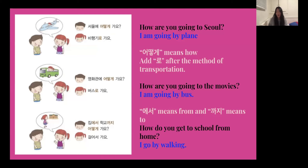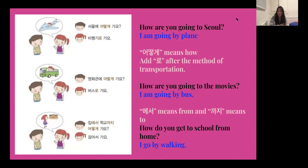There's an example reading. The boy says, 서울에 어떻게 가요? — Seoul is South Korea's capital — so: how are you going to Seoul? The girl responds, 비행기로 가요 — I'm going by plane. Let's look at the format. The question has 서울에 (the place) and 어떻게 가요 (어떻게 means 'how'). The answer is 비행기로 가요 — 비행기 is the form of transportation, and you add 로 after it. So: transportation + 로 + 가요. 가요 means 'go.' I'm going by plane.